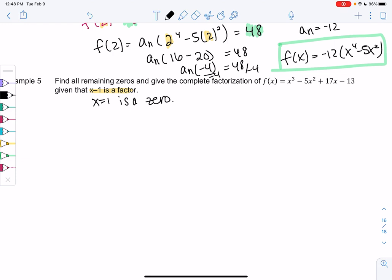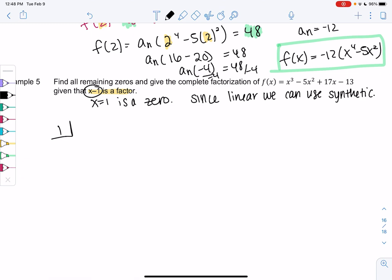So you can use long division or synthetic. I'm going to use synthetic, as long as the factor is linear, we can use synthetic. If you prefer long division, that's totally fine. Your choice. But I'm going to use synthetic. So I'm going to put the 1 out front. We put the zero out front, and then we put the coefficients. So it'll be 1, negative 5, 17, and negative 13.